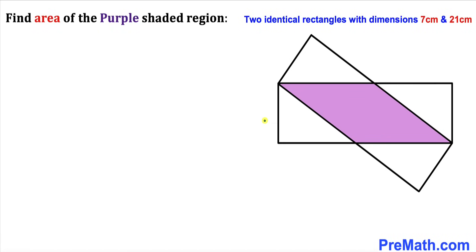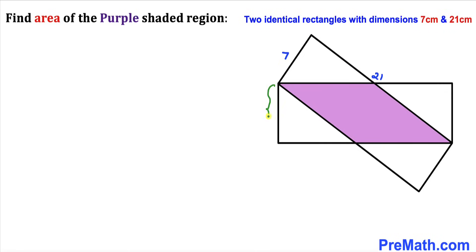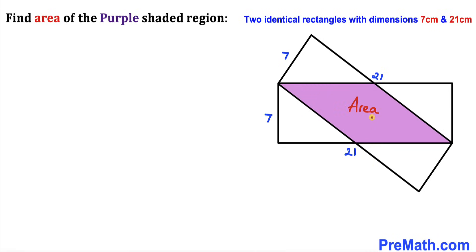Welcome to pre-math. In this video we have got two identical rectangles put together, as you can see in this diagram, and as a result we get this purple shaded region in between them. The side lengths of these rectangles are 7 centimeters and 21 centimeters. This length is 21 centimeters and this width is 7 centimeters, and likewise for the second rectangle. Our task is to calculate the area of this purple shaded region.